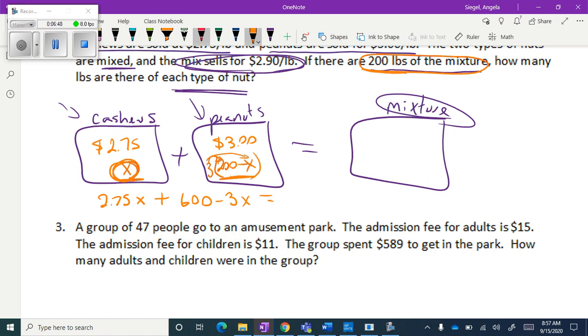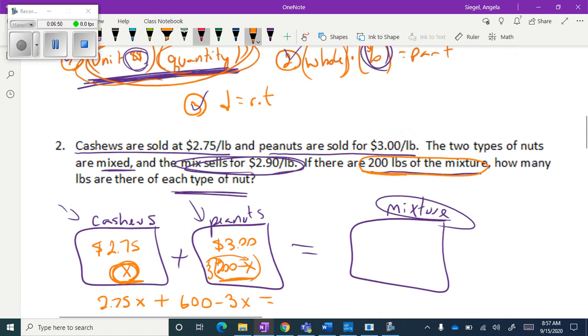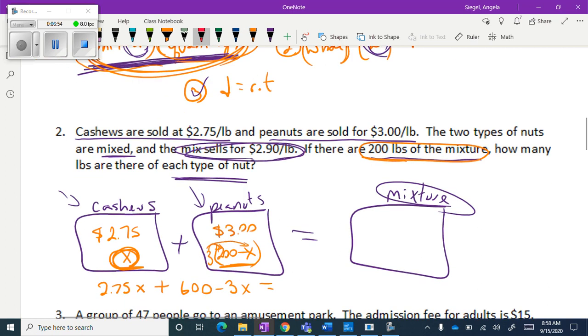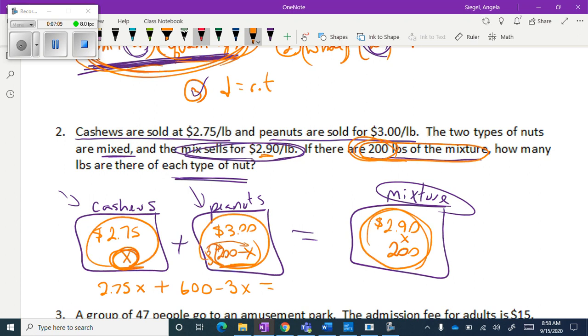What do we know? Let's go back up here. I'm thinking unit and quantity. So the mix sells for $2.90. That's my unit. And the quantity, they also give us that, 200 pounds. So I'm going to take 2.90 times 200, just like I've done with all of these. So 2.90 times 200 is 580.